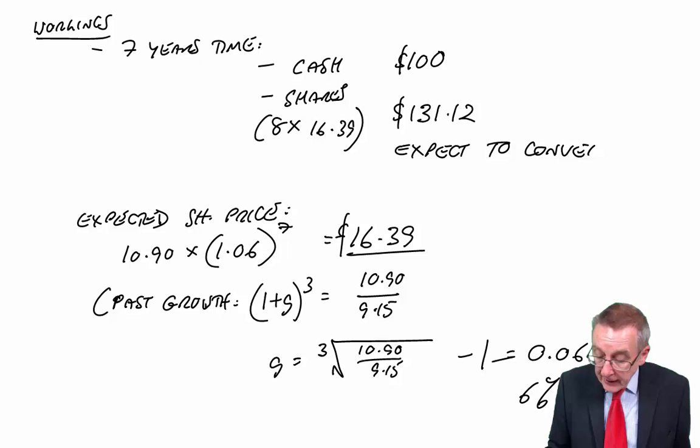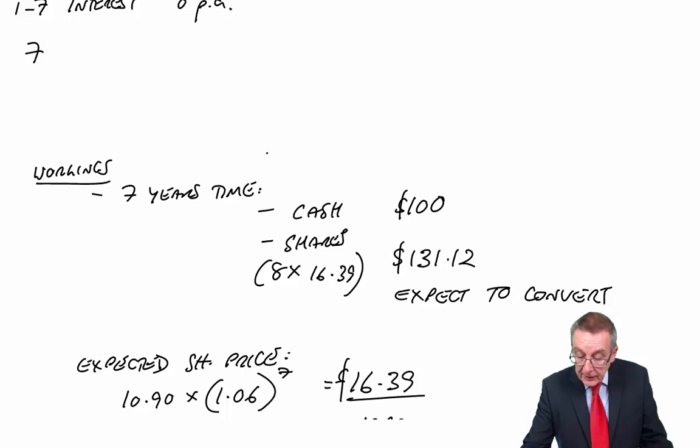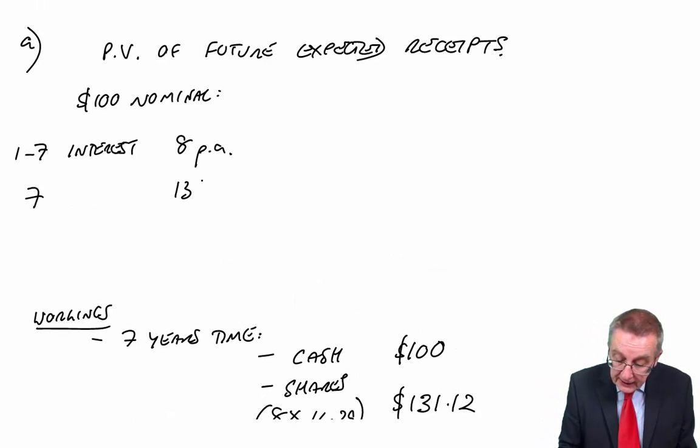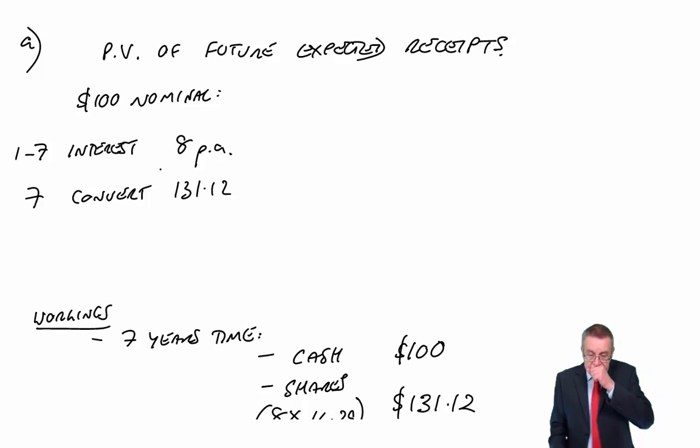It might not be, but all we have to do here to get the current market value of these convertibles is to know what we expect will happen. Because we expect that to be the share price, we will expect them to convert. And on that basis, the expected receipt, if I go back to my first table, in seven years' time, they expect to receive shares worth 131.12.